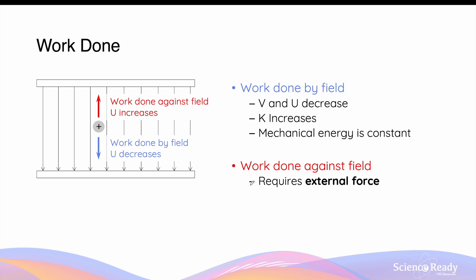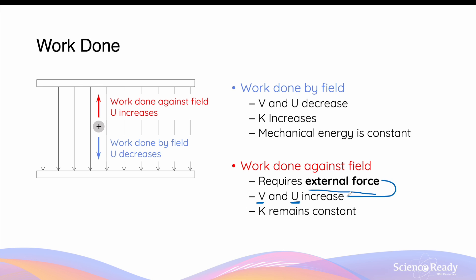There is a distinction between work done by the field and work done against the field. If we want to move a positive charge away from the negatively charged plate, in the opposite direction of the field lines, we need to apply an external force to oppose the electric force. When this occurs, we are doing work against the electric field, which results in an increase in both the electric potential and potential energy. All energy from the external force is transformed into potential energy, so kinetic energy remains constant. Since an external force outside the system is applied, the mechanical energy of the charge is not conserved — it increases because the potential energy increases.